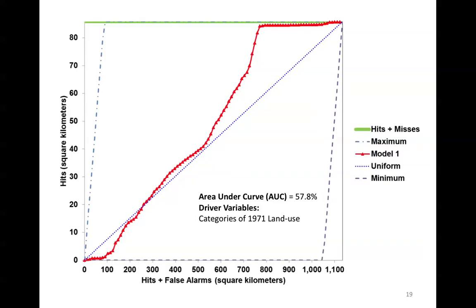Now we can examine the TOC plot. You should notice that the axes have changed and some lines have been added. The axes are bounded differently. On the horizontal axis, we can see the size of the study area, about 1134 square kilometers. On the vertical axis, we see the size of the reference change, about 86 square kilometers. The area under the curve and the curve itself haven't changed, but the interpretation has become more intuitive because the axis labels no longer have ratios. Furthermore, two dashed lines — the maximum and minimum lines — outline the mathematically possible area that the TOC curve can appear in.